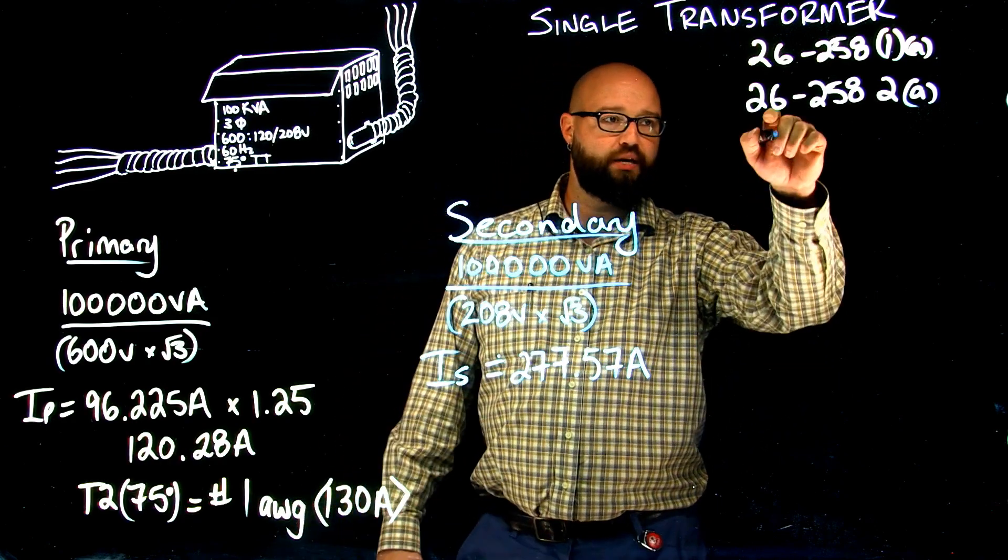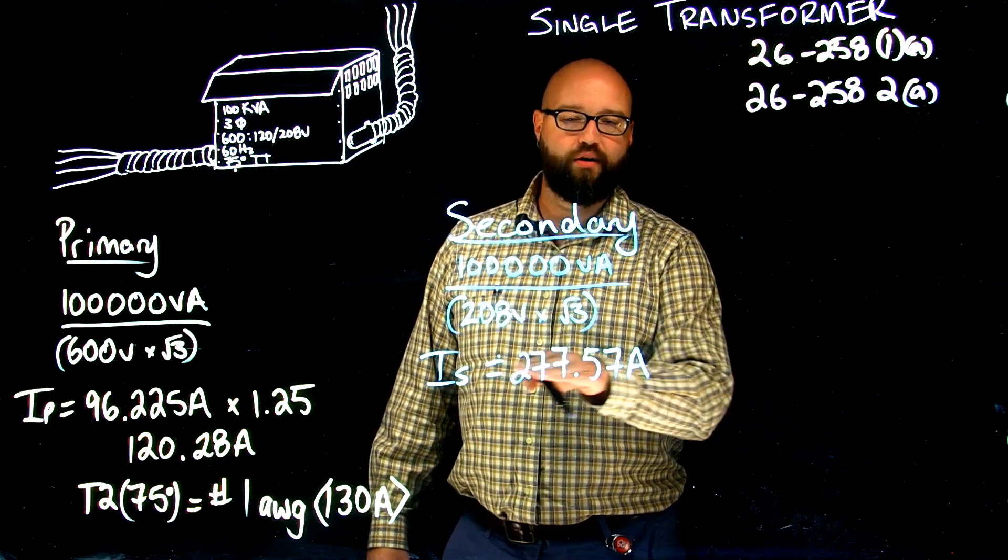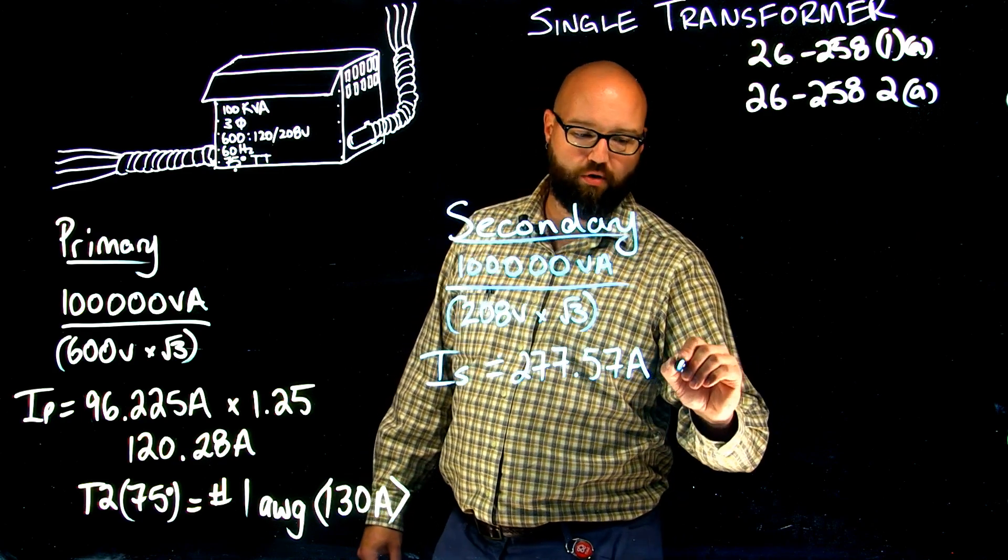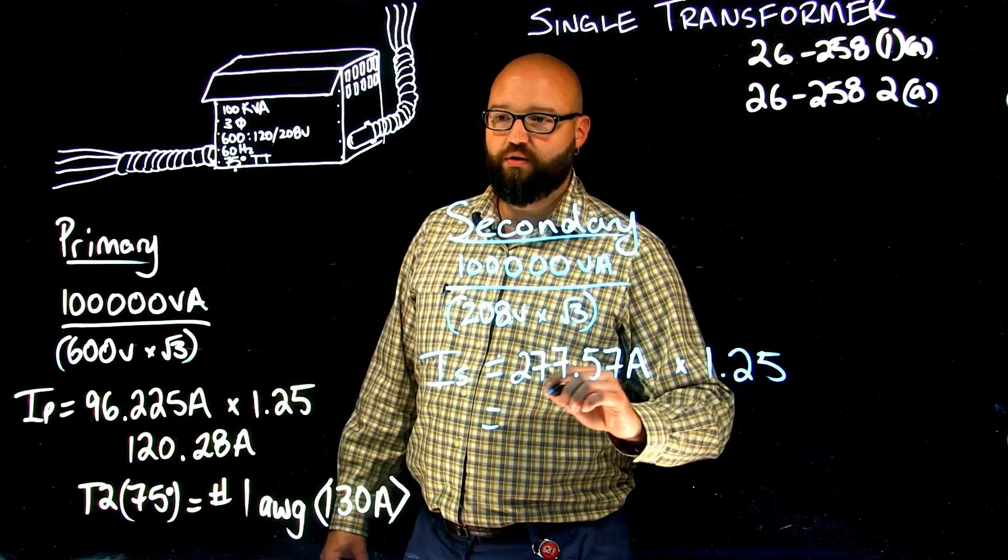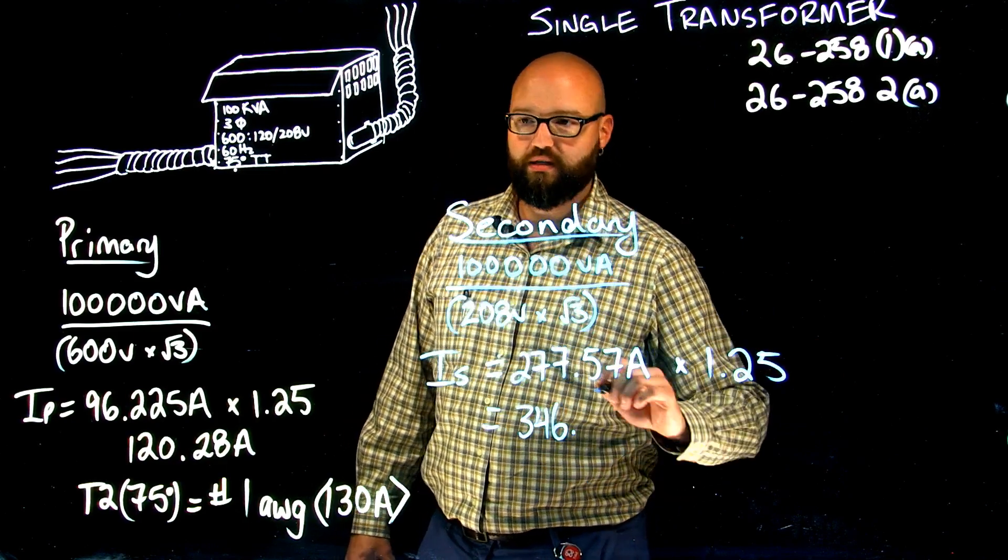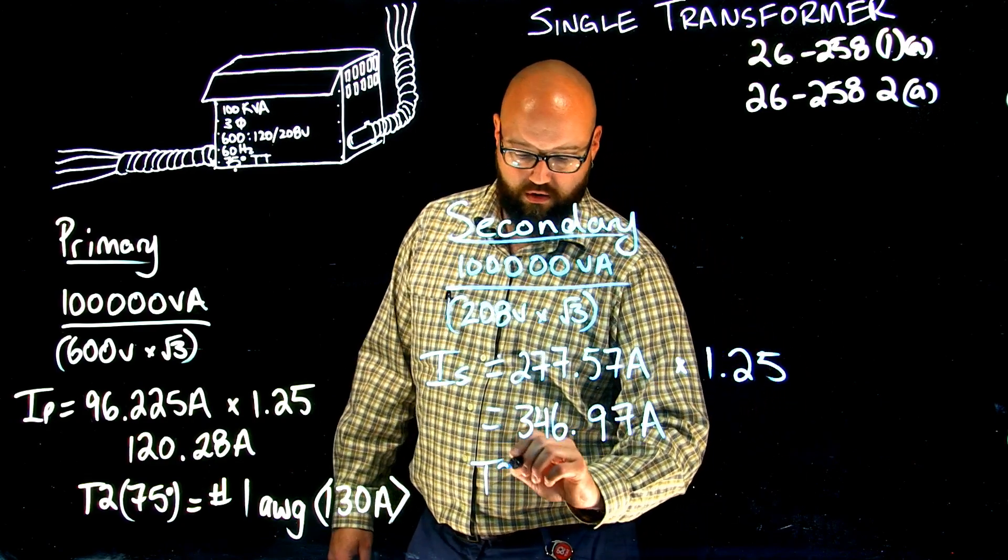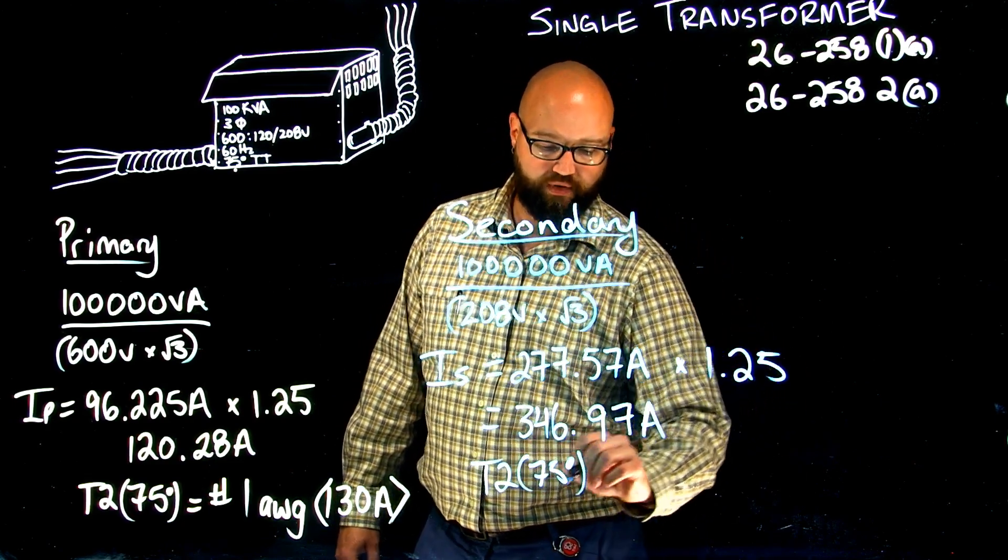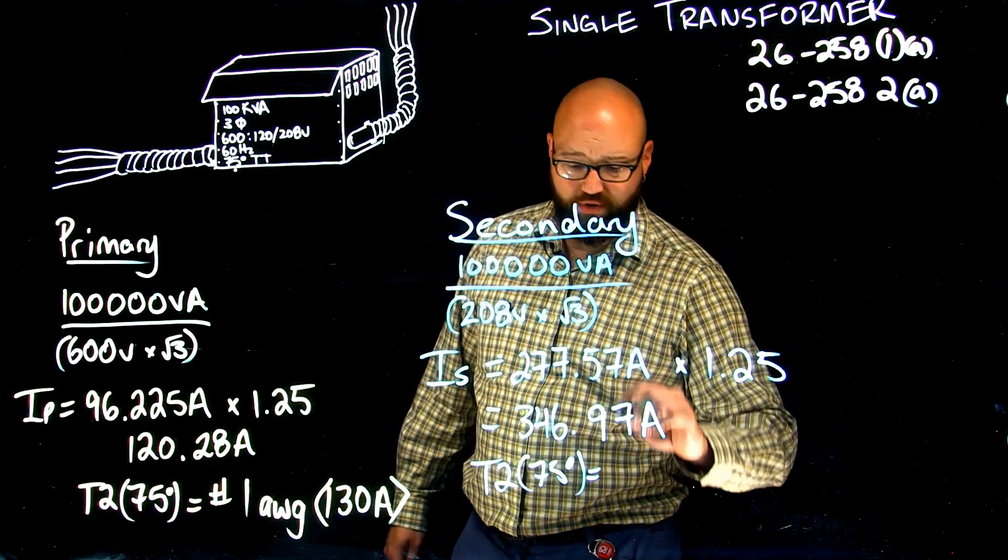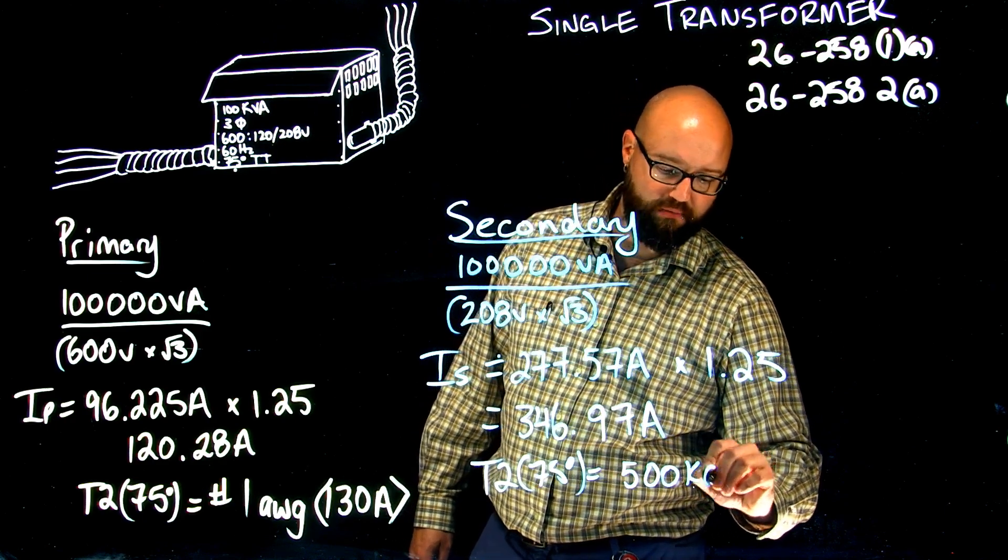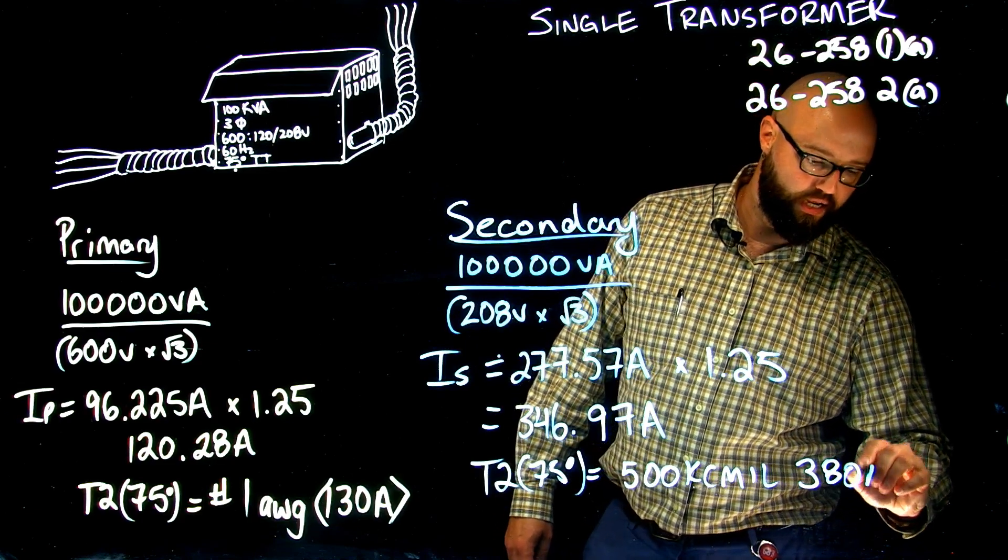And again, it tells me 26.258 subrule 2, item A, I need to have a conductor with an ampacity at least 125% of this number. So, again, times 1.25 gives me a value of 346.97 amps. I go to table 2, again, in the 75-degree column. I'm going to choose a conductor with at least that ampacity. We end up choosing a 500 KC mil with an ampacity of 380 amps.